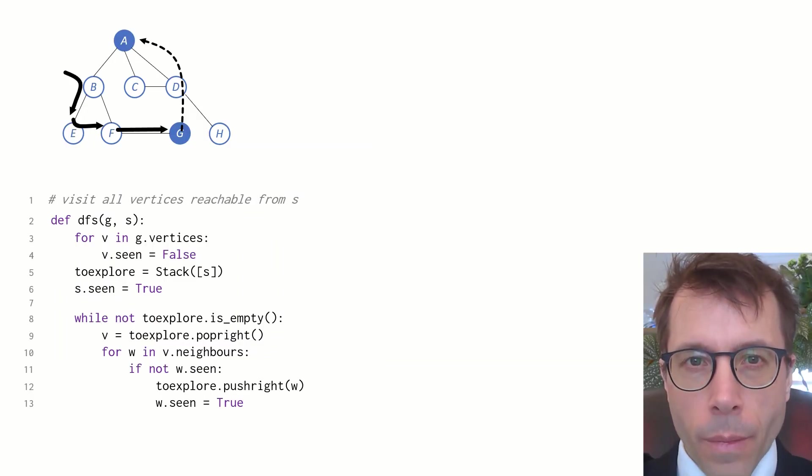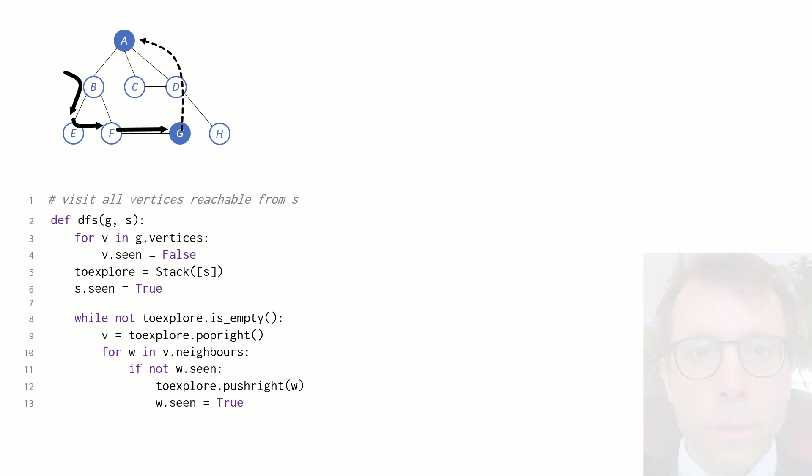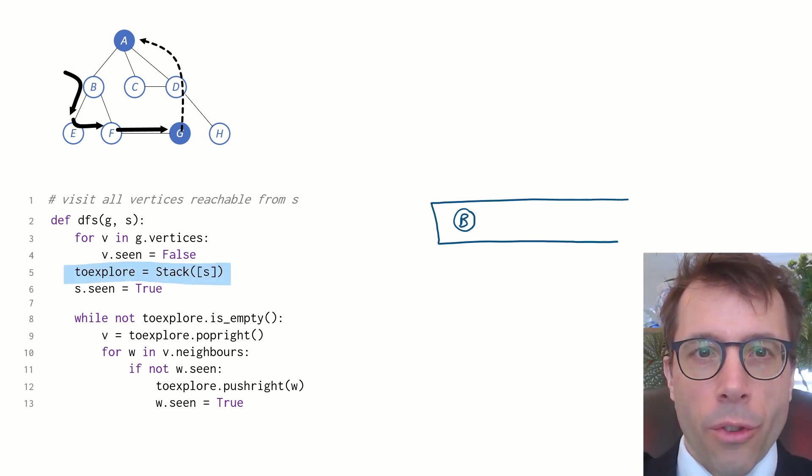Pause the video, have a read through this code, and then once you've done that, press play, and we'll go through what the code does. We're going to keep a stack, listing all the vertices we've come across but not yet explored. We'll initialize it to hold a single vertex, our start vertex, which let's say is B.